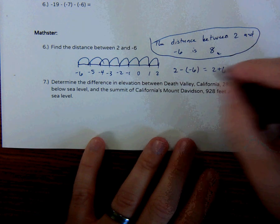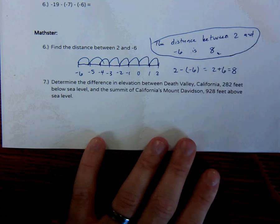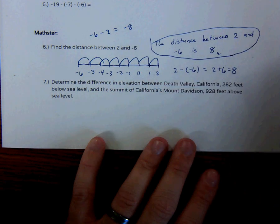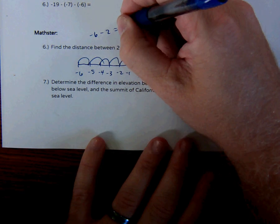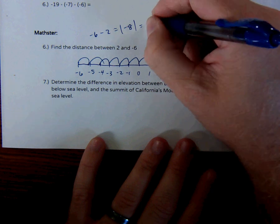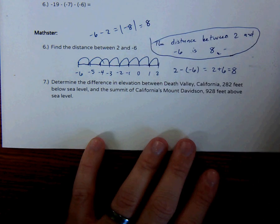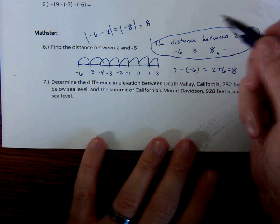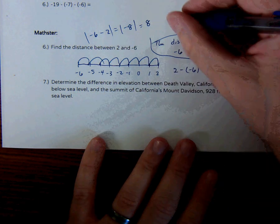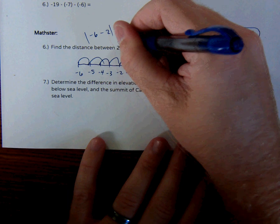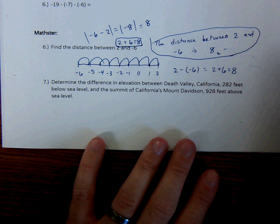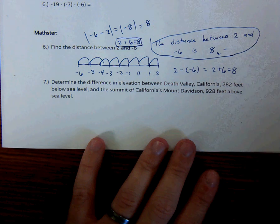We could have said negative 6 minus 2. Well, the problem with that is it's equal to negative 8. So if you do it like this, we have to recognize that you always have to take the absolute value. So that's equal to positive 8. Another way to look at it is to take both numbers when we're doing distance, make them positive, and then add them together. So this could have been 2 plus 6, which is obviously 8.